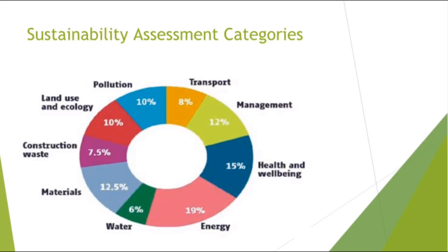The second category is management, covering management policy, commissioning, site management, and procurement. The third is health and well-being, addressing indoor and external issues like sound, light, air, and safety. The fourth is transport, covering all transport related to CO2 and location-related factors. The fifth is water consumption and efficiency.